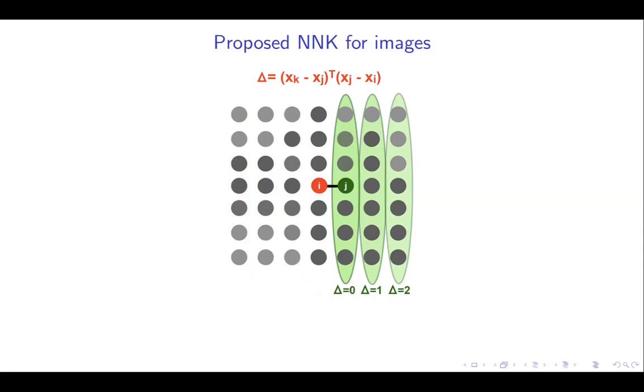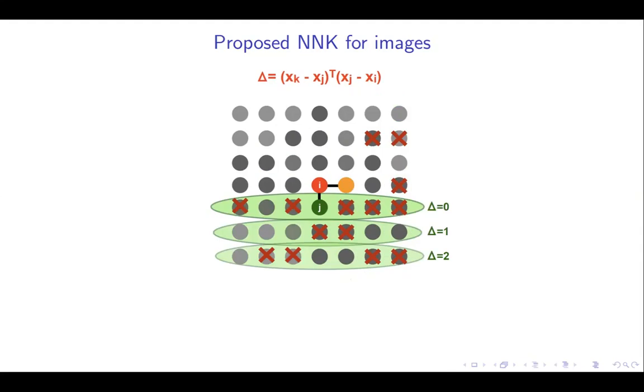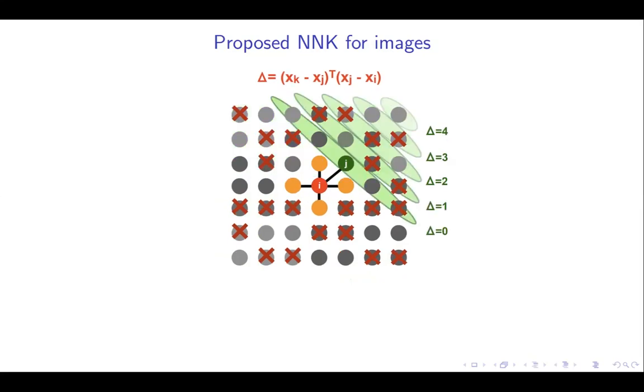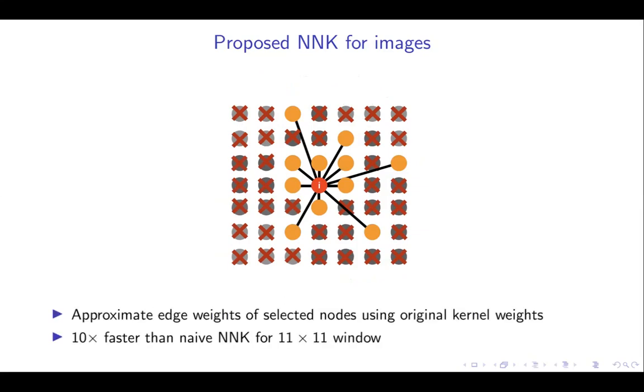Now, pixels with intensity similarity below the threshold are zero weighted, that is, will be disconnected and can be pruned. We perform this step iteratively, selecting closest pixel that is not pruned, following which we apply condition to remove pixels that are below threshold till we have no more pixels for processing. This greedy setup allows us to achieve speed ups in the order of 10x compared to the naive approach of applying NNK. Further, we approximate the edge weights corresponding to selected nodes using the original kernel weights as NNK maintains the relative importance of the neighbors.